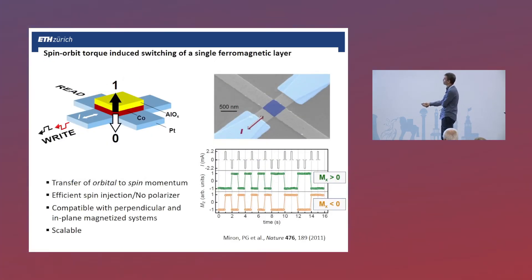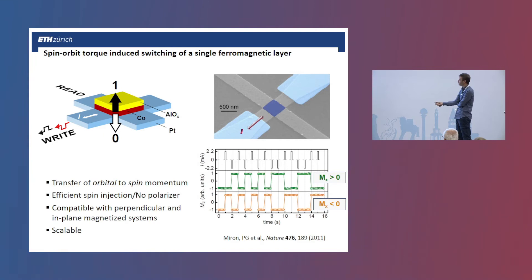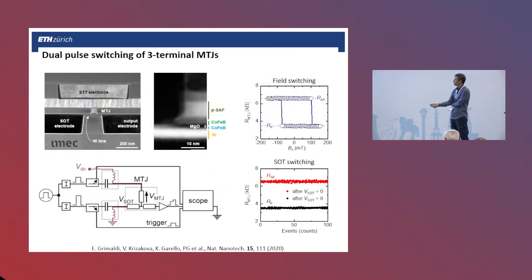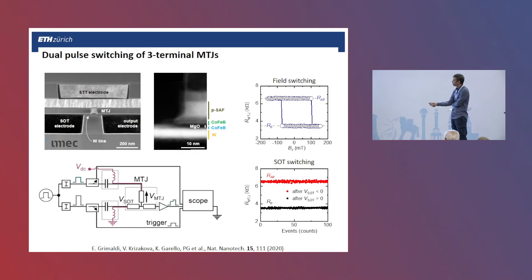By symmetry arguments, we can distinguish between two torques orthogonal to the magnetization: the damping-like torque and the field-like torque, acting similar to magnetic damping or to a magnetic field. These effects can be used to switch the magnetization of a single ferromagnetic layer by injecting current pulses into a planar structure. We have a platinum Hall cross with a cobalt dot less than a nanometer thick with perpendicular magnetization, and by injecting strong current pulses, we can reversibly switch the magnetization between up and down due to the action of these torques.